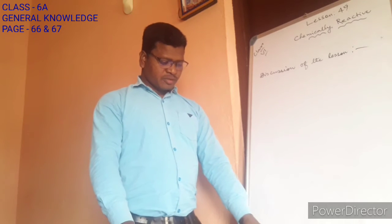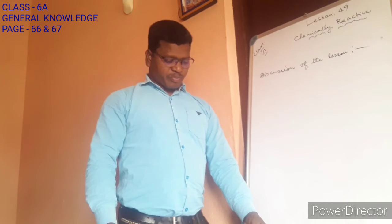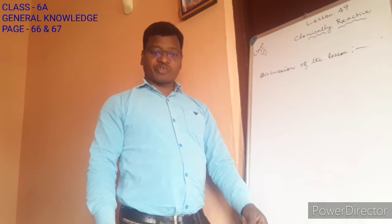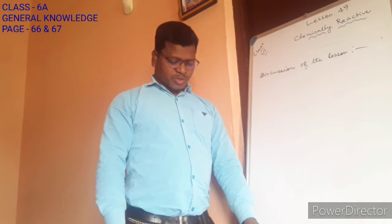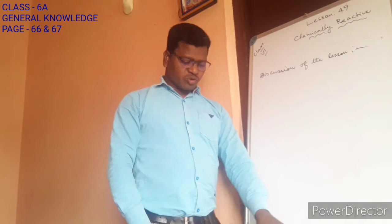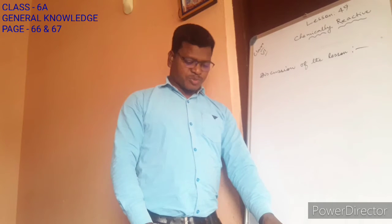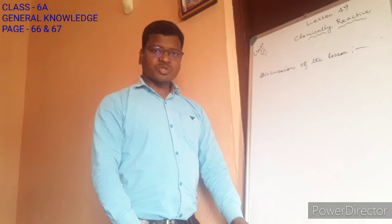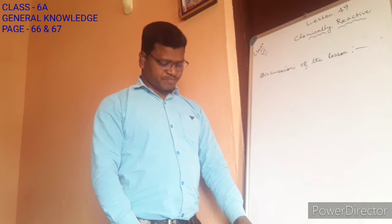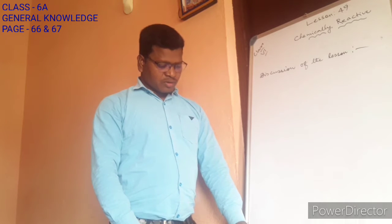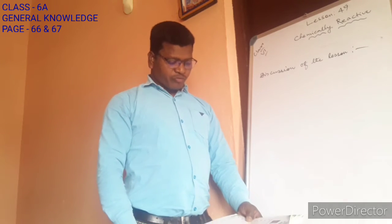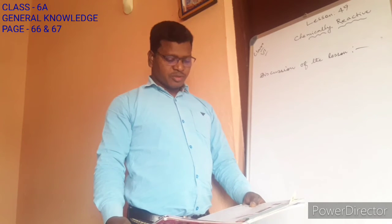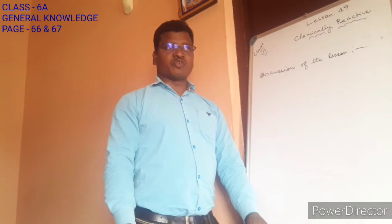First question: the red pigment of our blood is due to the presence of hemoglobin. 64 percent of hemoglobin is made of which nutrient? The answer is of course oxygen. Question number two: which white color element is used during the development of photographs?